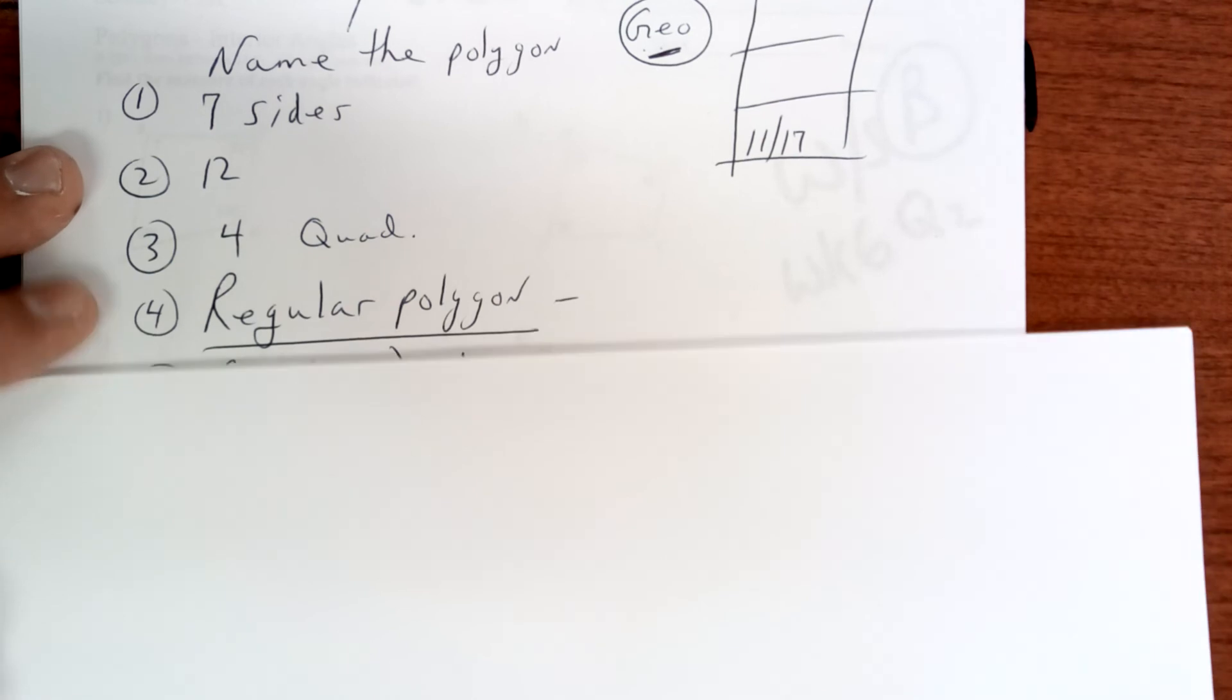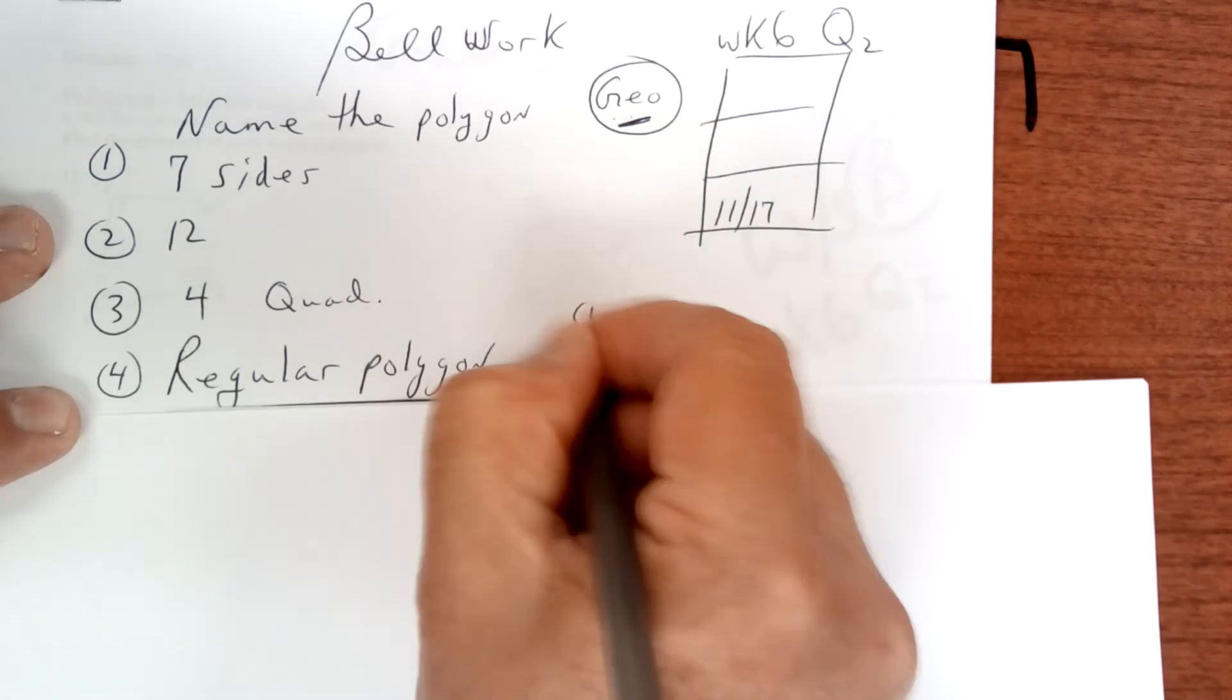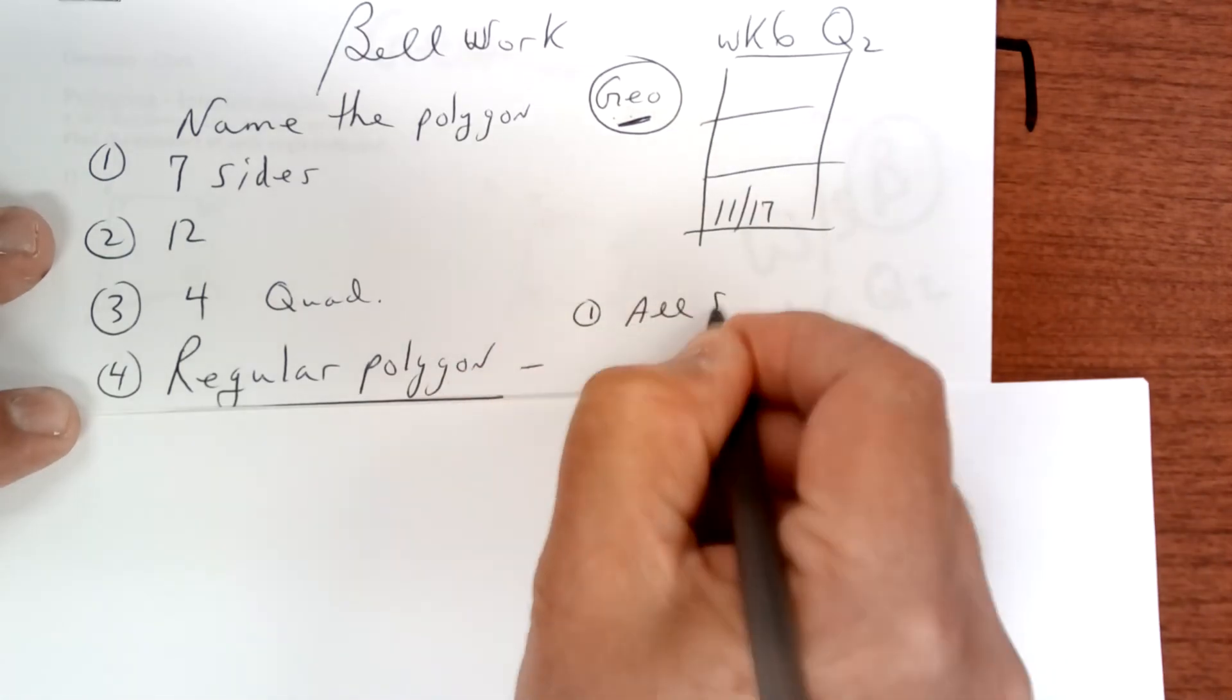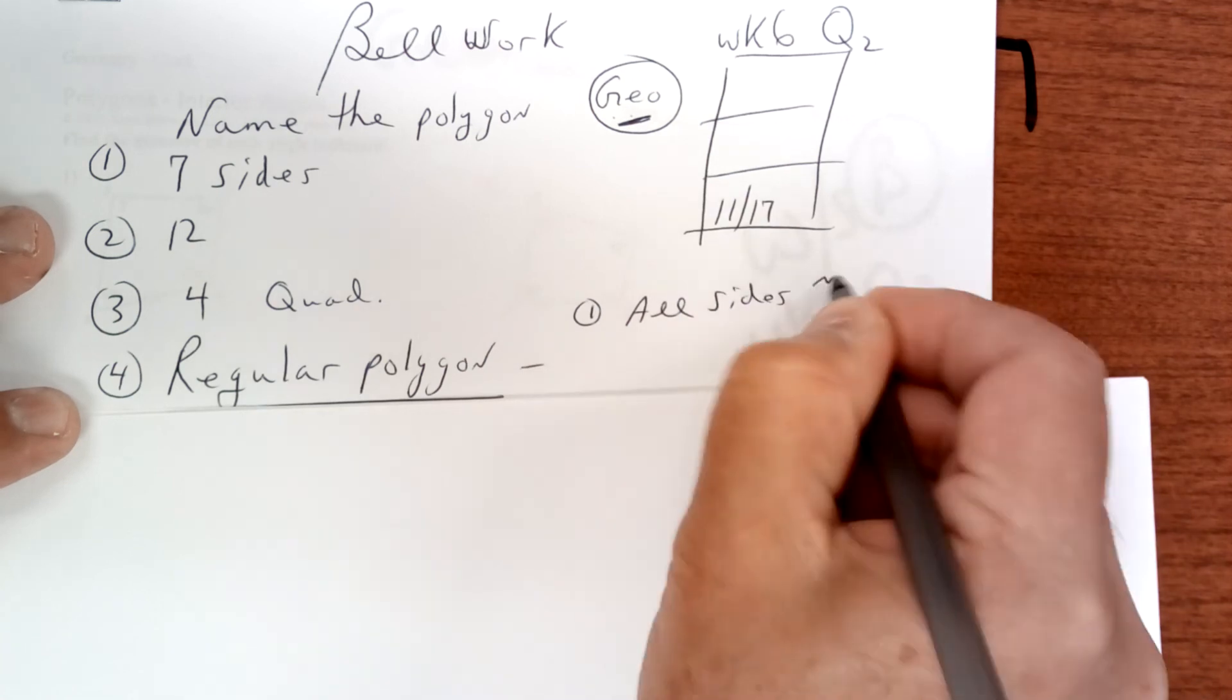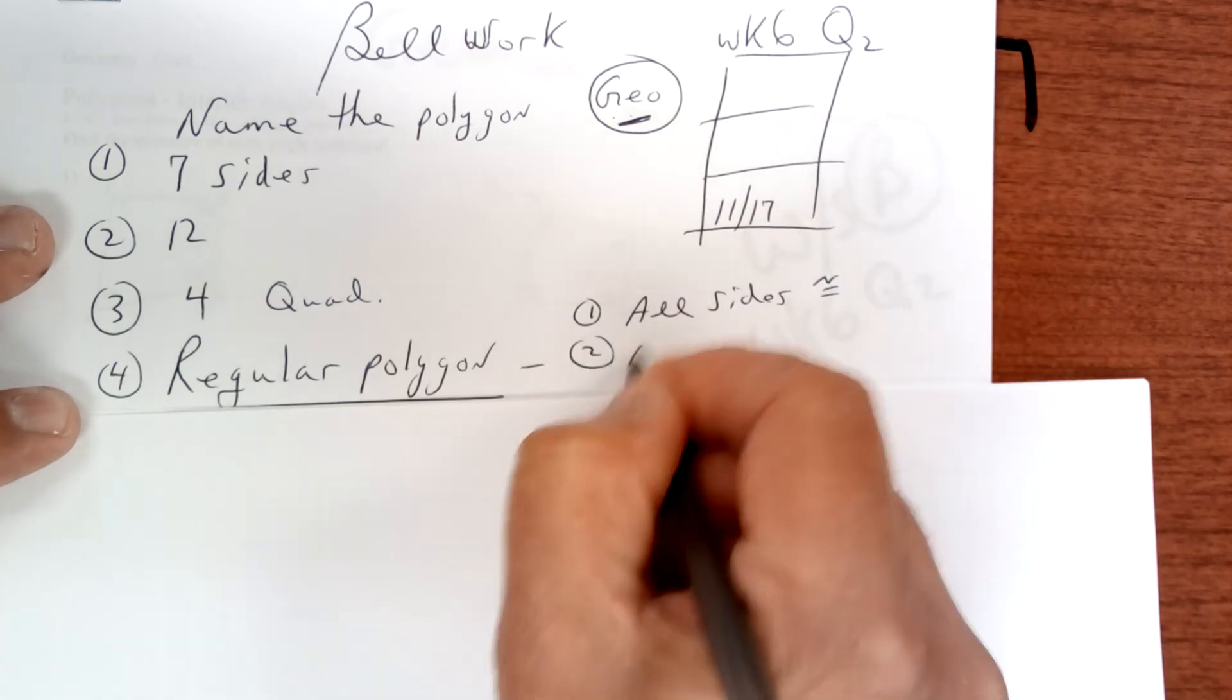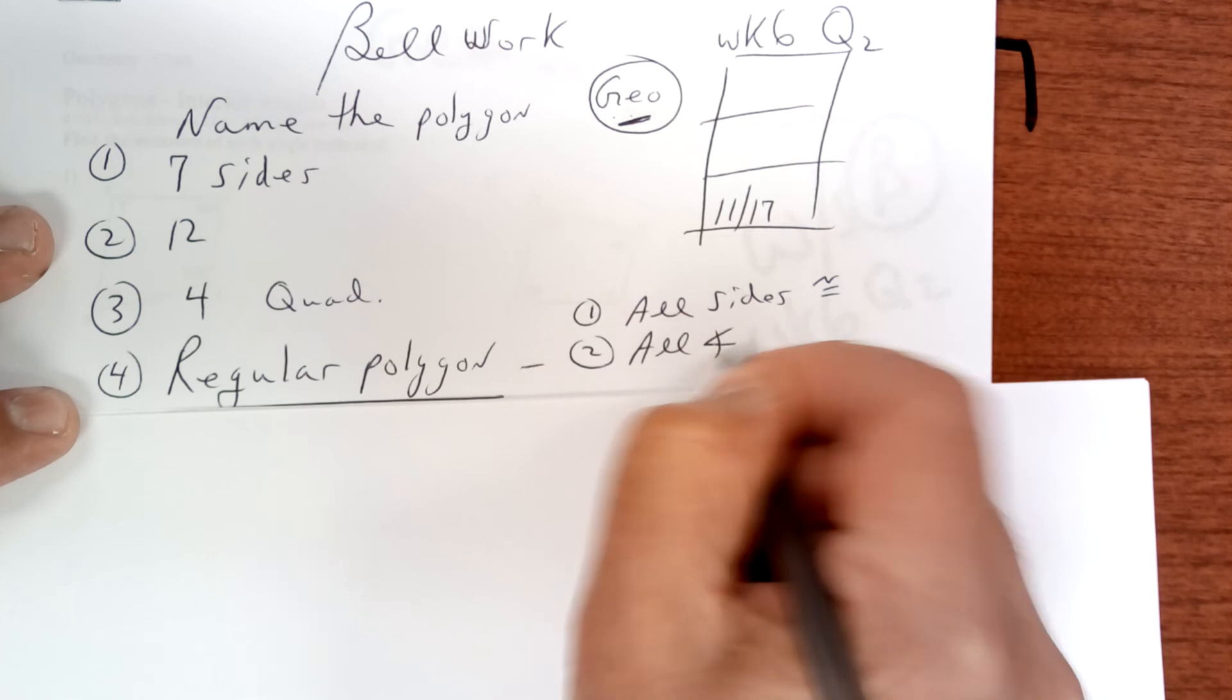What is a regular polygon? Two things: number one, all sides are congruent, and number two, all the angles are congruent. Write that down and memorize this word right here.